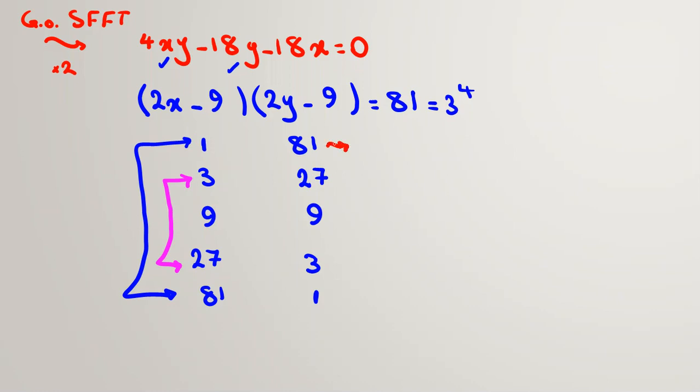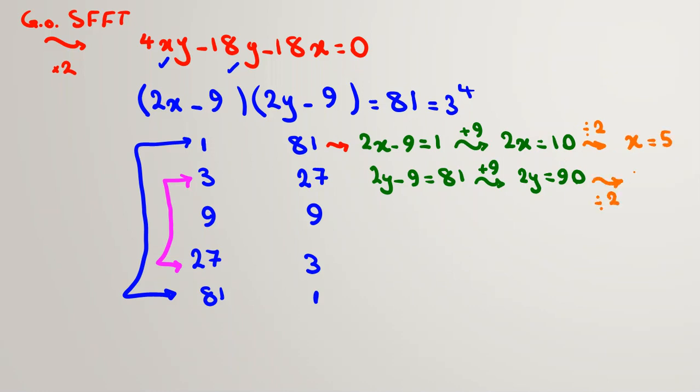In the first case, if I have 2x - 9 + 2y - 9 = 1 + 81, we should check both of them because x and y have to be positive integers. So 2x - 9 = 1 and 2y - 9 = 81. If you add by 9, 2x will be 10. And here, again add by 9, 2y will be 90. If you divide by 2, x = 5 and y = 45.